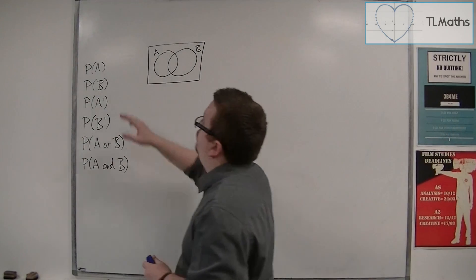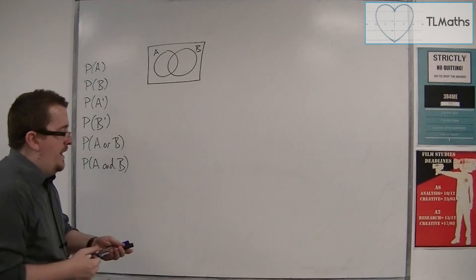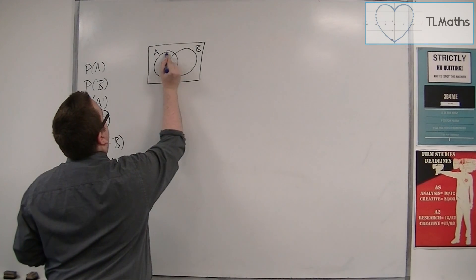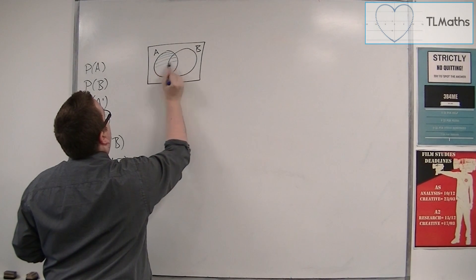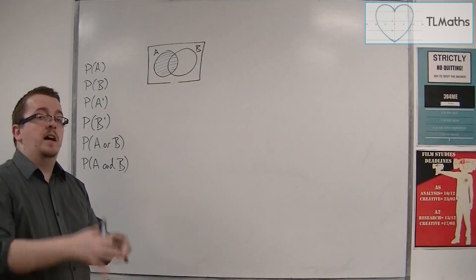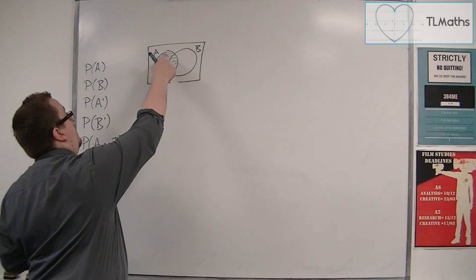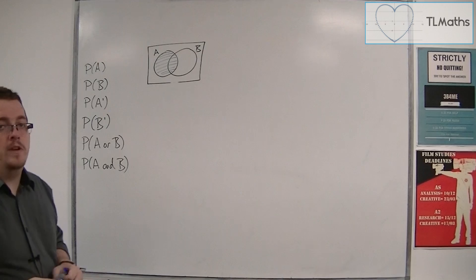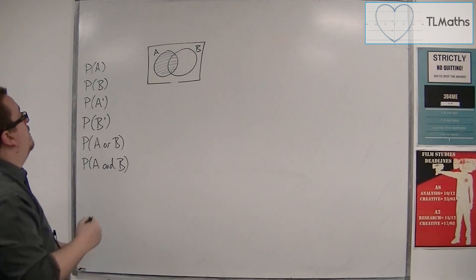So if I'm looking at the probability of A, then we're looking at the whole circle of A. So that includes that overlap. The probability of A covers both the bit of A that is by itself and this intersection here. So that's the probability of A.